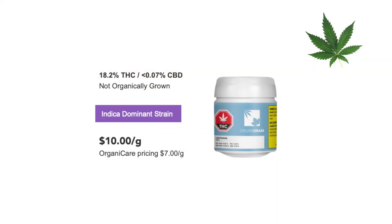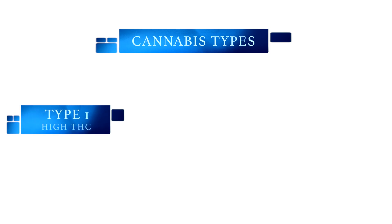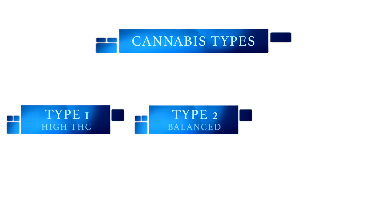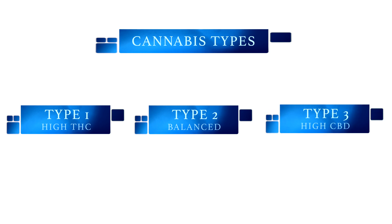For now, the simplest way to predict the effect of the cannabis you are purchasing is to look at the THC and CBD content. You can think of it this way: Type 1 has high THC, Type 2 has a balance of THC and CBD, and Type 3 is mainly high CBD. Many of you will have heard of the terms CBD and THC. These are the most abundant medically active compounds found in cannabis, and we will see how they fit into this picture after we learn about the endocannabinoid system.